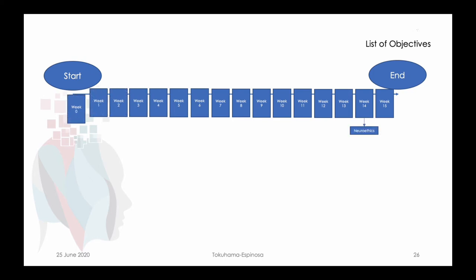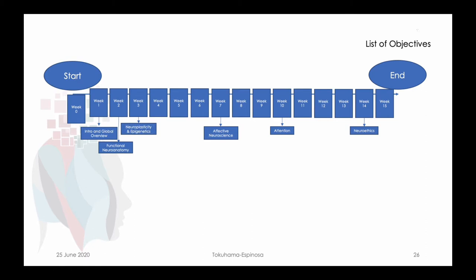We think about what the last topic might be — for example, neuroethics — but at the beginning, definitely the introduction, followed by fundamental basics of neuroanatomy. Affective neuroscience fits well at the middle, because it has so much to do with neurophysiology but also with psychological terms. We know there are pillars of attention and memory that need to be talked about, and neuroplasticity. So we fill in the main topics in a logical order.